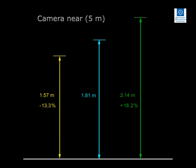When standing 0.5 metres in front of the plane of motion, the measured height was 2.14 metres, which is 18.2% greater than when measured in the plane of motion. If we now consider the same scenario, but with the camera in the far position, i.e. 15 metres from the plane of motion.